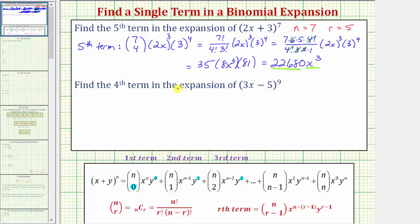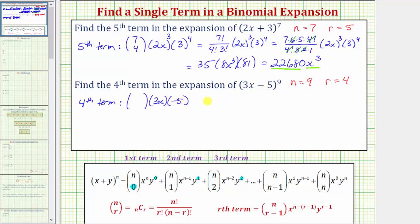Looking at our second example, we're asked to find the fourth term in the expansion of the quantity three x minus five raised to the power of nine. So n is nine and r is four. We need to be careful here: the first term in the binomial is three x, but because of the subtraction, the second term is negative five. For the fourth term, the exponent on negative five is one less, which is three. So the combination is nine choose three, and because three plus six equals nine, the exponent on three x must be six.